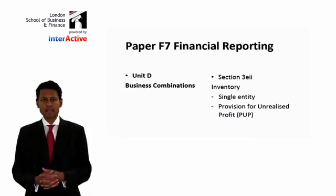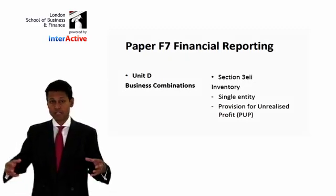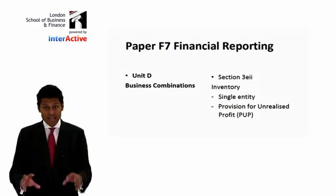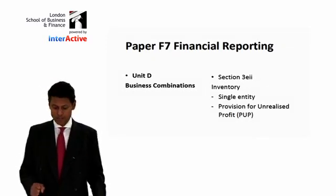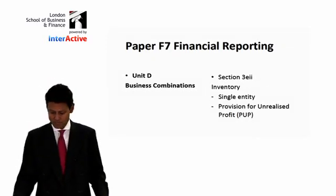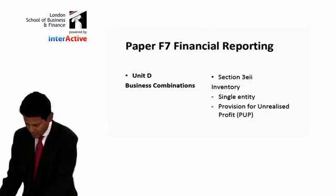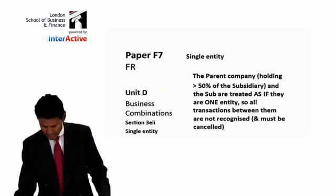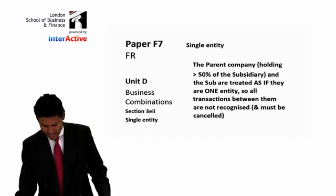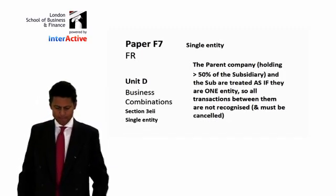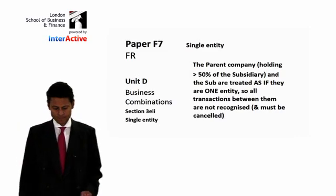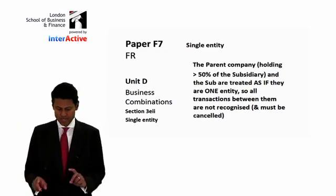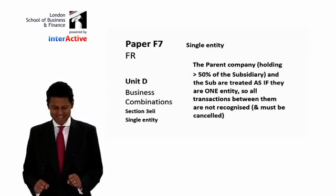The first concept is I have to tell you about a single entity, and then once you understand that, I'll take you into something called a provision for unrealized profit. So the first area is single entity — what does that mean? Still Unit D, business combinations, Section 3E2, single entity.